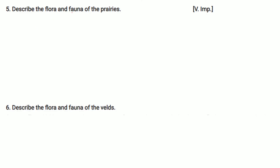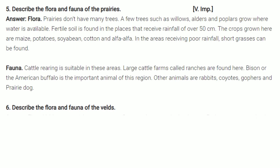Describe the flora and fauna of the prairies. Flora: Prairies don't have many trees. Few trees like willows, alder and poplar grow here. Fertile soil is found in places that receive rainfall of over 50 cm, where crops like maize, potatoes, soya bean, cotton and alfalfa are grown. In areas receiving poor rainfall, short grasses can be found. Fauna: Cattle rearing is suitable in this area. Large cattle farms called ranches are found here. Bison or American buffalo is an important animal of this region. Other animals include rabbits, coyotes, gophers and the prairie dog.